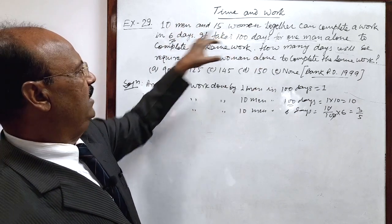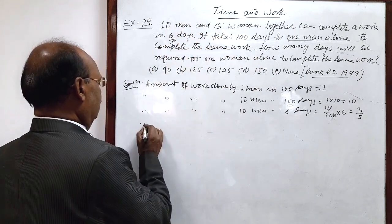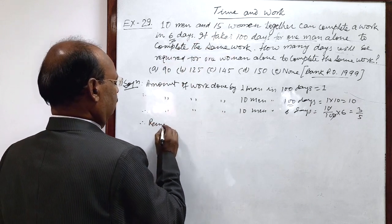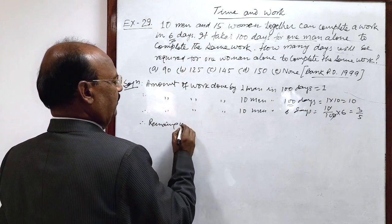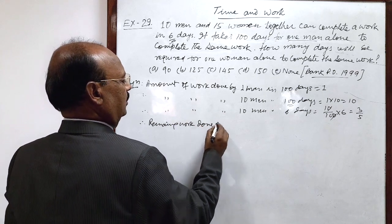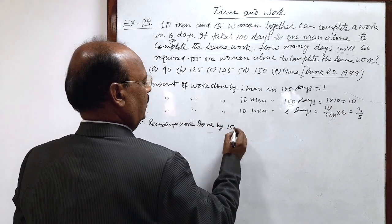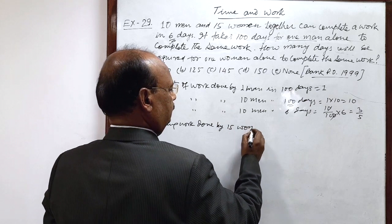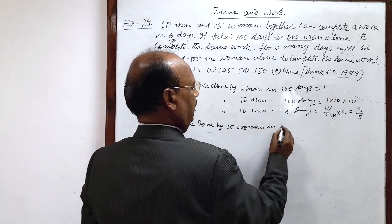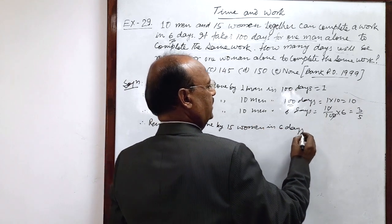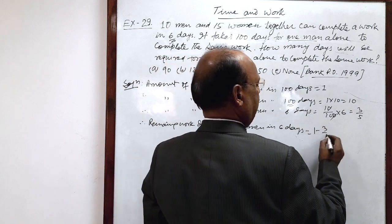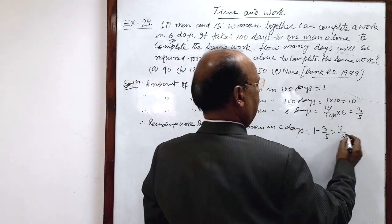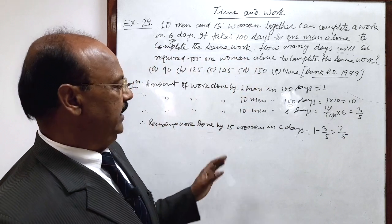So remaining work will be done by 15 women in 6 days. Therefore remaining work which is done by 15 women in 6 days is 1 minus 3 by 5, this is equal to 2 by 5.